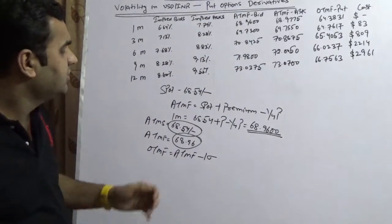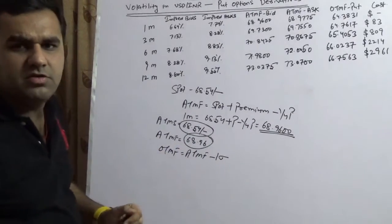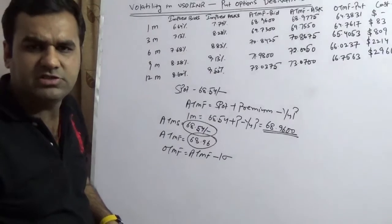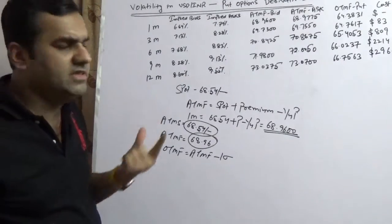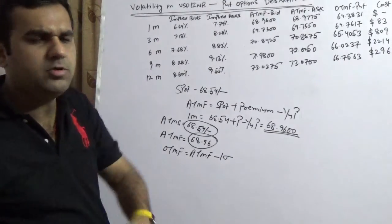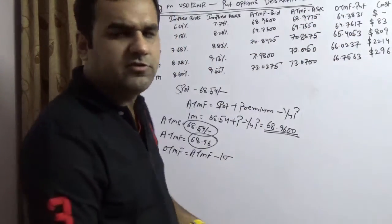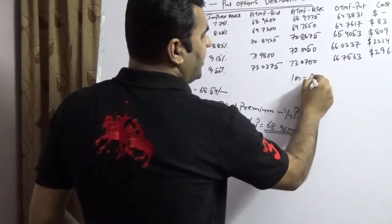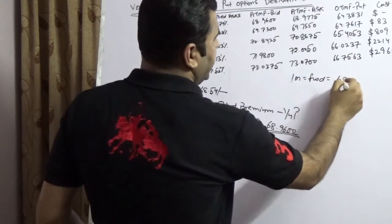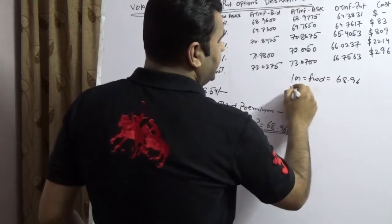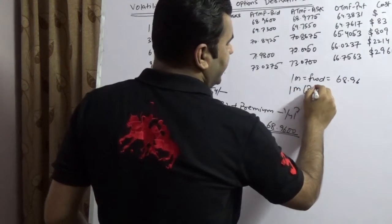So a particular person who is having a foreign currency receivable to sell would sell one month using a put contract which is this 64.38. So for one month if he is going to sell a forward contract he would have got 68.96, but he is doing the one month put, and he would get 64.38.